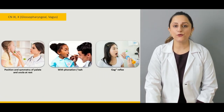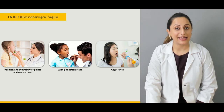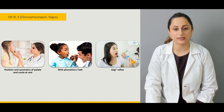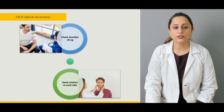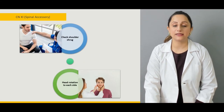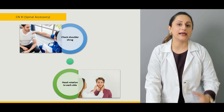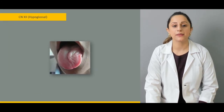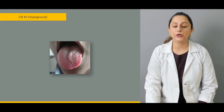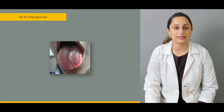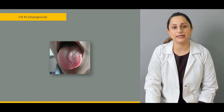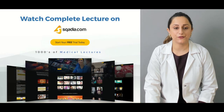We then check the ninth and tenth cranial nerves, namely the glossopharyngeal and the vagus. We also explain the functionality of the spinal accessory nerve, and look for abnormalities of the hypoglossal nerve and how to clinically examine it.